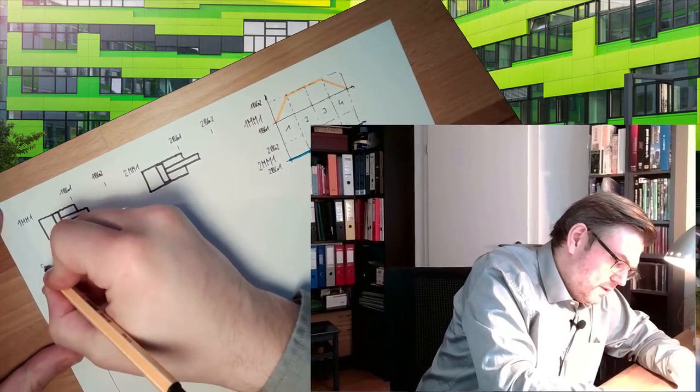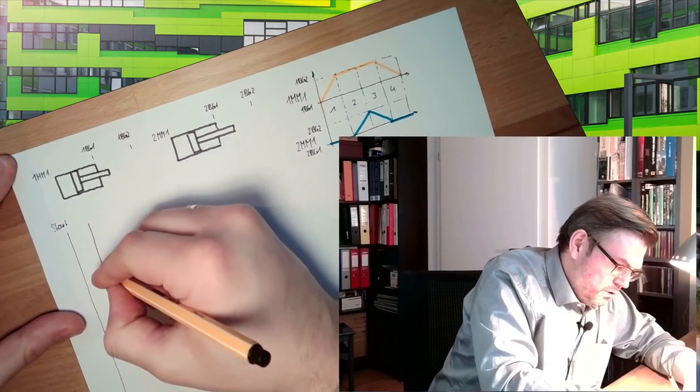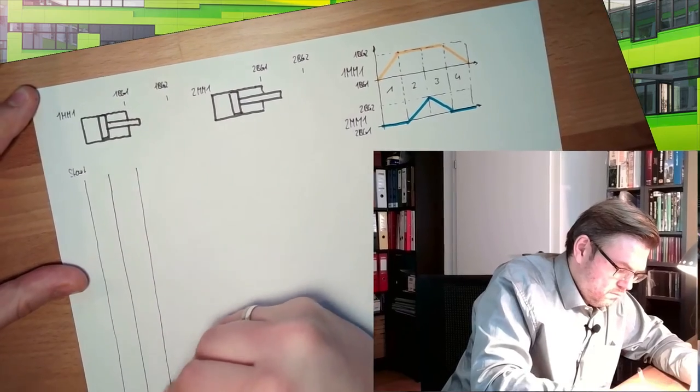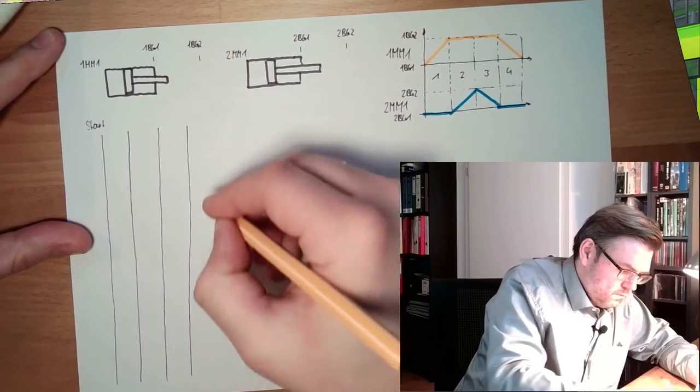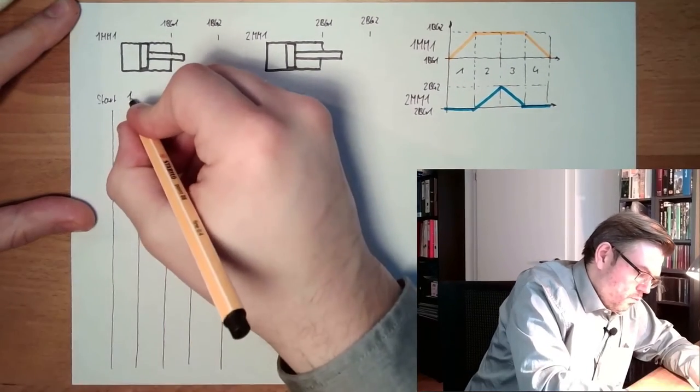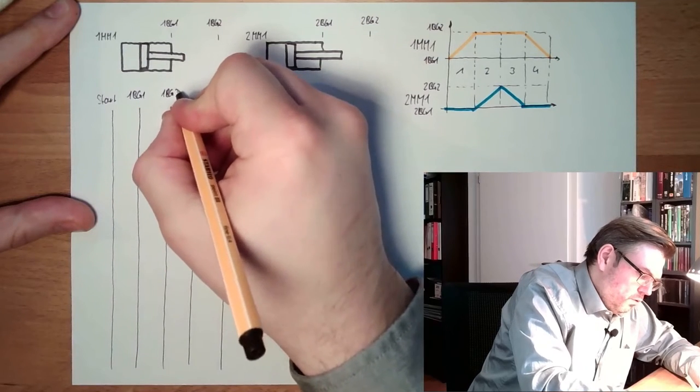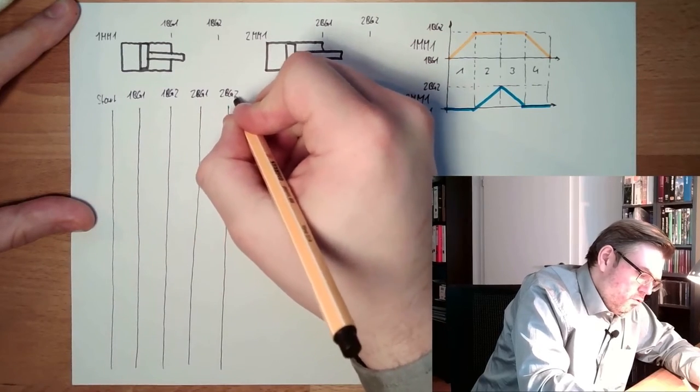So we have again a start command, and we have the limit switches: one PG1, one PG2, two PG1, and two PG2.